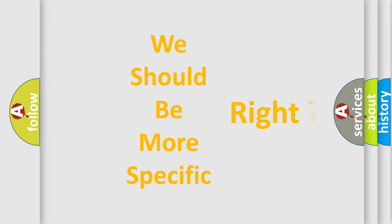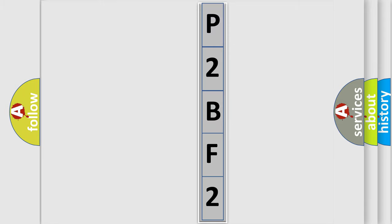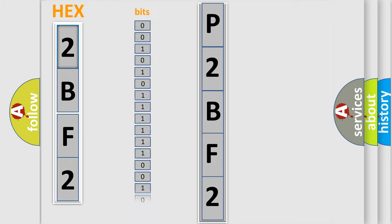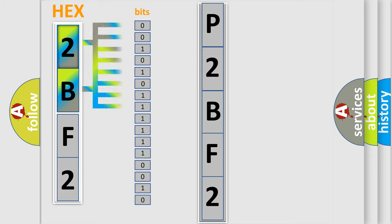The following demonstration will help you look into the world of software for car control units. The error code is split into two bytes consisting of 16 bits. One bit is the basic unit that each computer works with. The bit has two logical states: zero, low level, and one, high level.